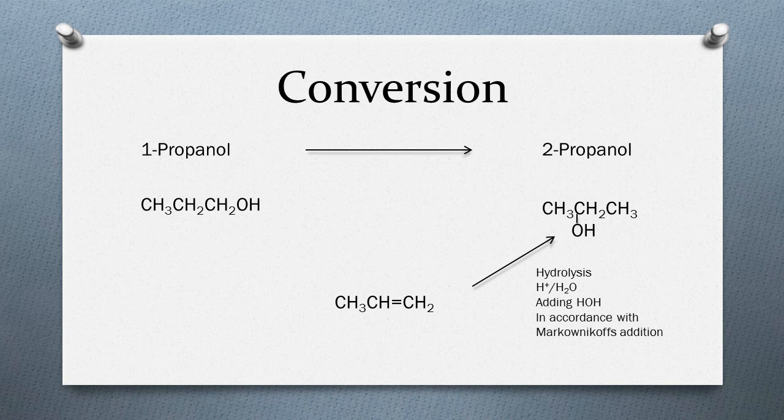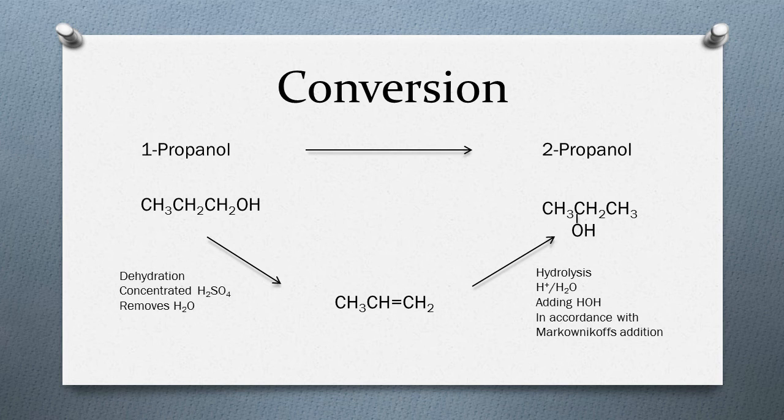Because by using a dehydration reaction using concentrated sulfuric acid, we can easily convert 1-propanol to propene. Therefore, the steps needed to be taken for conversion of 1-propanol to 2-propanol would be: convert 1-propanol to propene, and then hydrolyze it using dilute sulfuric acid and water so that you get 2-propanol.